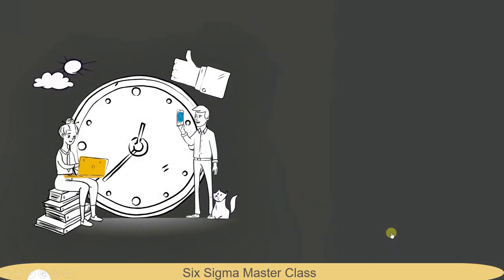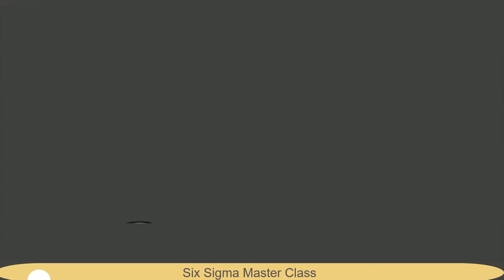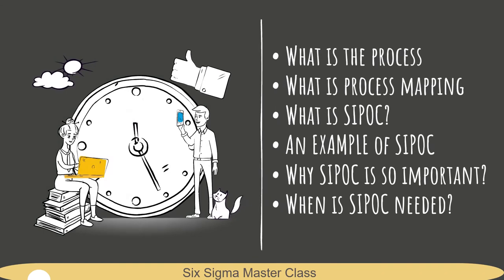Let's summarize all the points we covered in this lecture. First, we saw the seven basic tools of quality: process mapping, check sheets, histogram, Pareto charts, fishbone diagram, 5Y analysis, and run charts. After that, we covered process mapping in detail, including what a process is, what process mapping is, what SIPOC is, an example of SIPOC, why SIPOC is so important, and when SIPOC is needed.